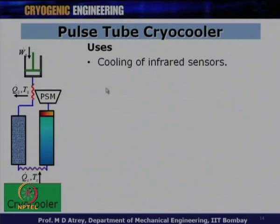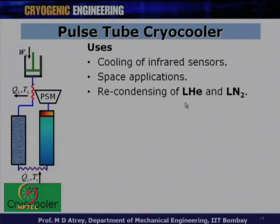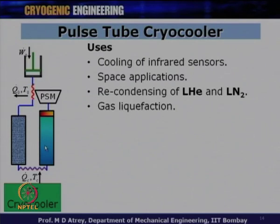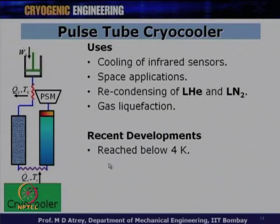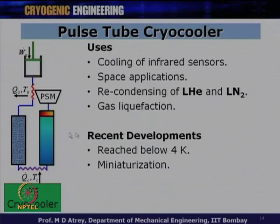Uses of pulse tube coolers include: cooling infrared sensors for space applications; recondensing liquid helium and liquid nitrogen; and nitrogen or helium liquefaction depending on whether single-stage or two-stage. Recent development allows less than 4 K temperature using a two-stage pulse tube cryocooler, and miniaturization is possible with a Stirling-type pulse tube cryocooler. Hence, pulse tube coolers are very important candidates among cryocoolers.